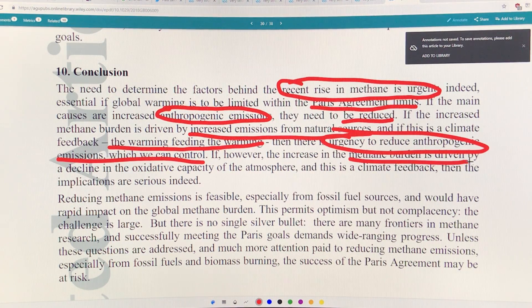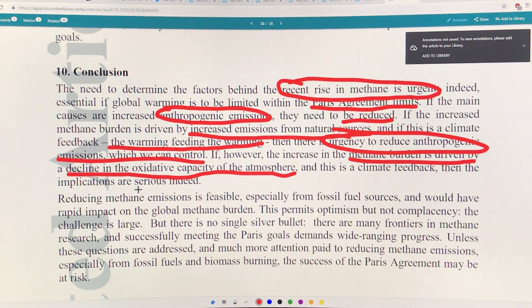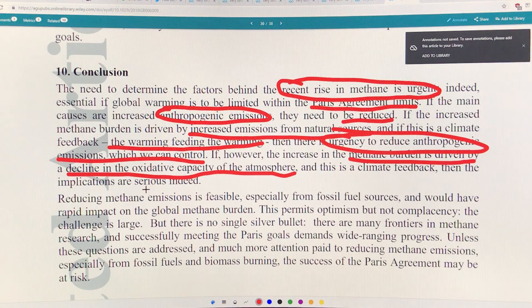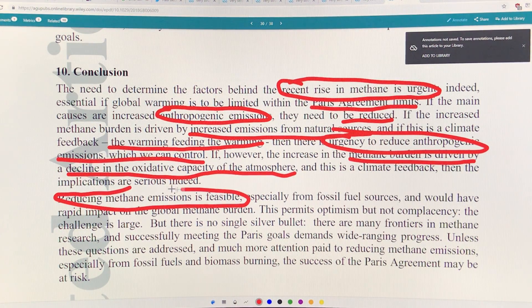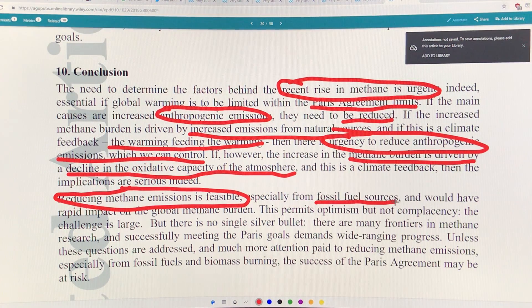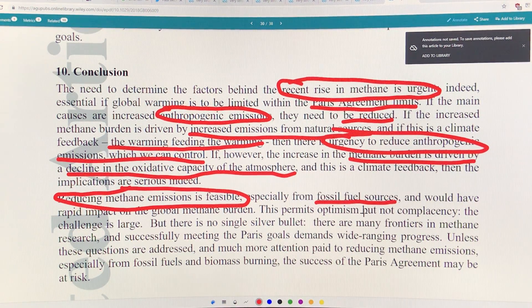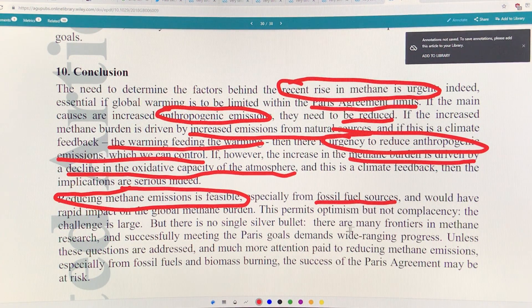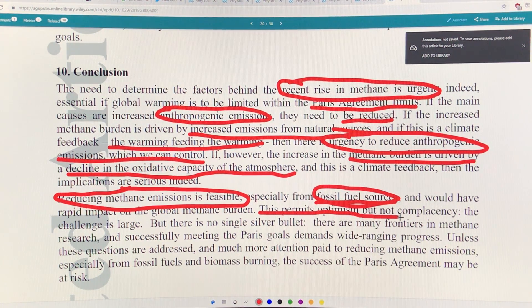If however the increase of the methane burden is driven by a decline in the oxidative capacity of the atmosphere, this is a climate feedback and the implications are very serious indeed. The bottom line is that the balance is thrown, the earth is out of whack. Methane is rapidly rising. Reducing methane emissions is feasible, especially from fossil fuel sources. The fracking explosion in the last decade has greatly increased production. When you frack, it's natural gas, over 90% methane, and the leak rates are huge. It was talked about as a bridge fuel years ago, you don't hear that anymore. The leaks are just too large.